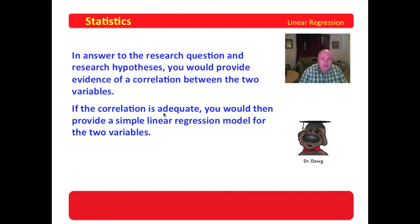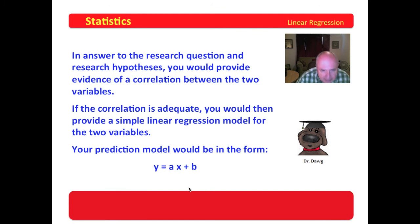Now, the key to that is adequate. You would set that level of adequacy as a researcher. Your prediction model would be in the form Y equals AX plus B. Now, guys, all of you statisticians out there are just having a cow right now because I said Y equals AX plus B, and I didn't say Y equals B plus AX. Well, get over it. Y equals AX plus B is algebraically equivalent to Y equals B plus AX.